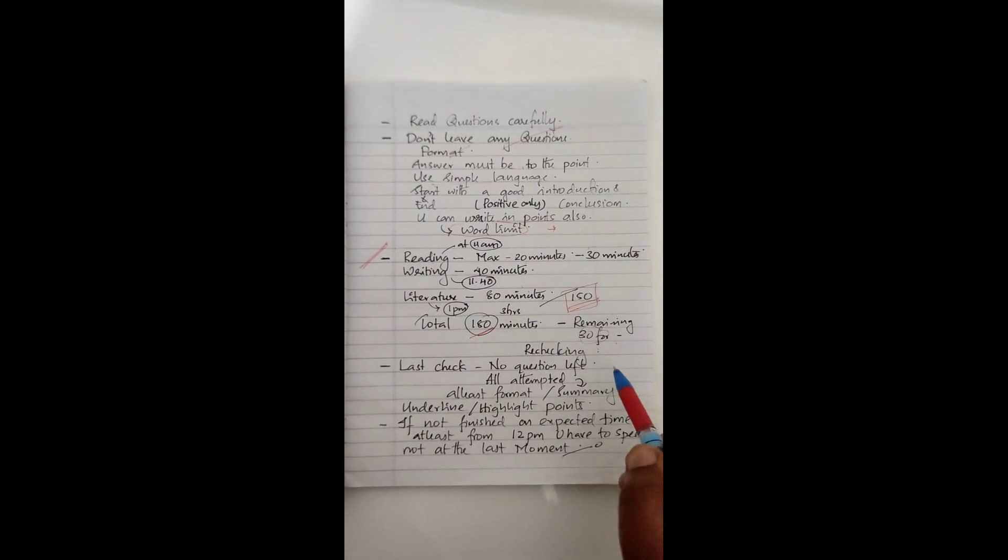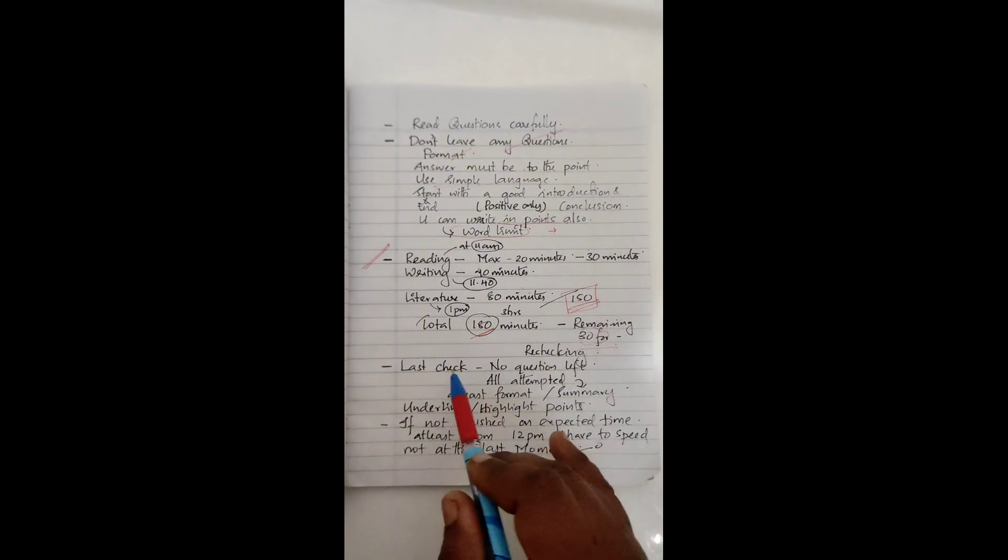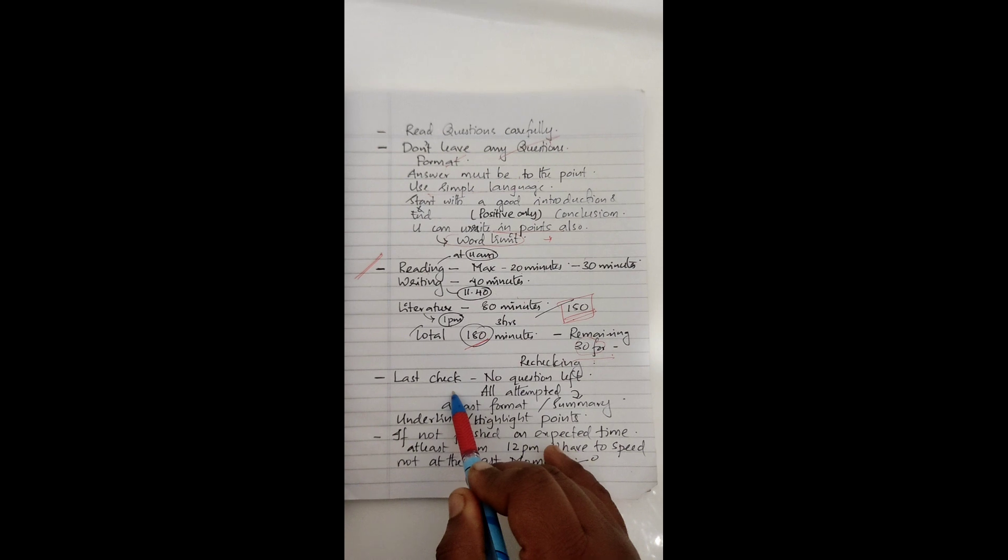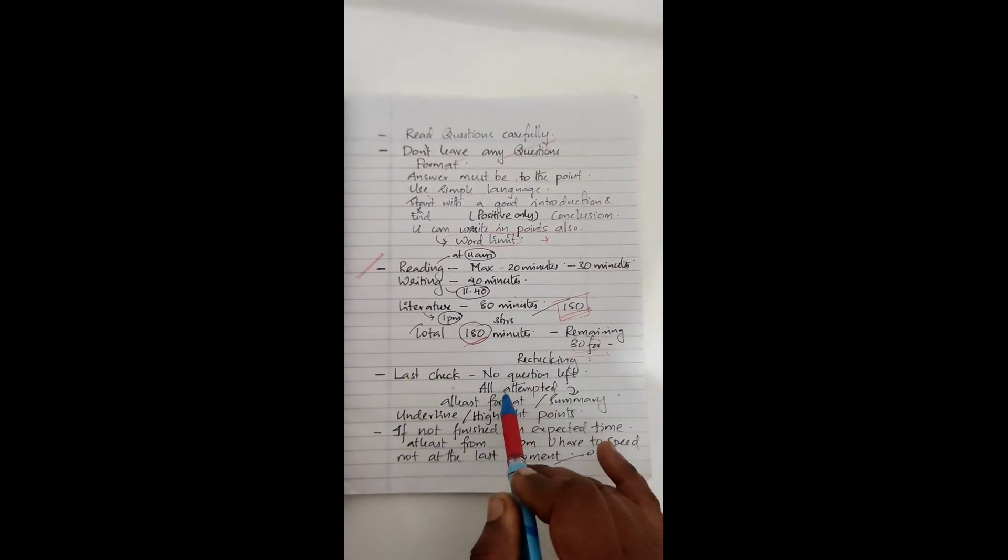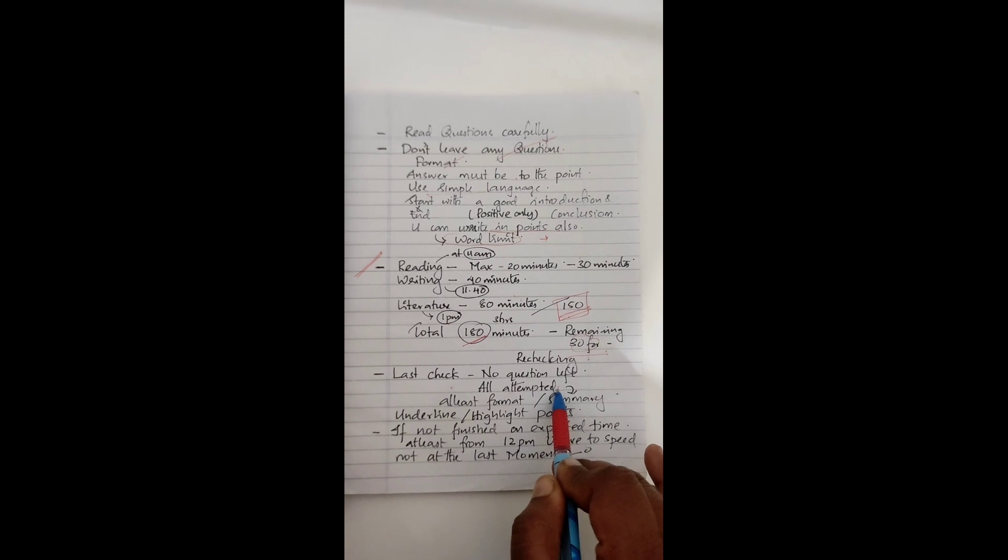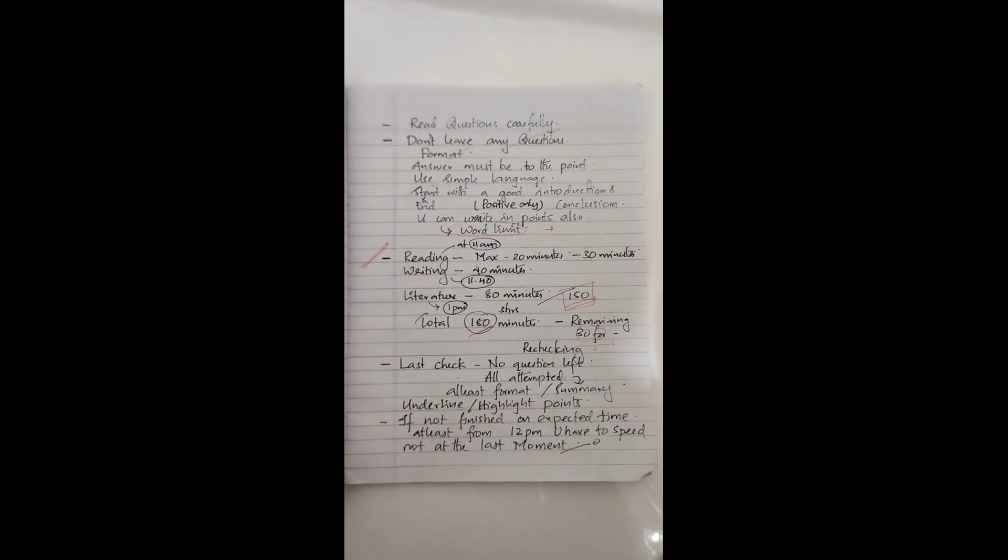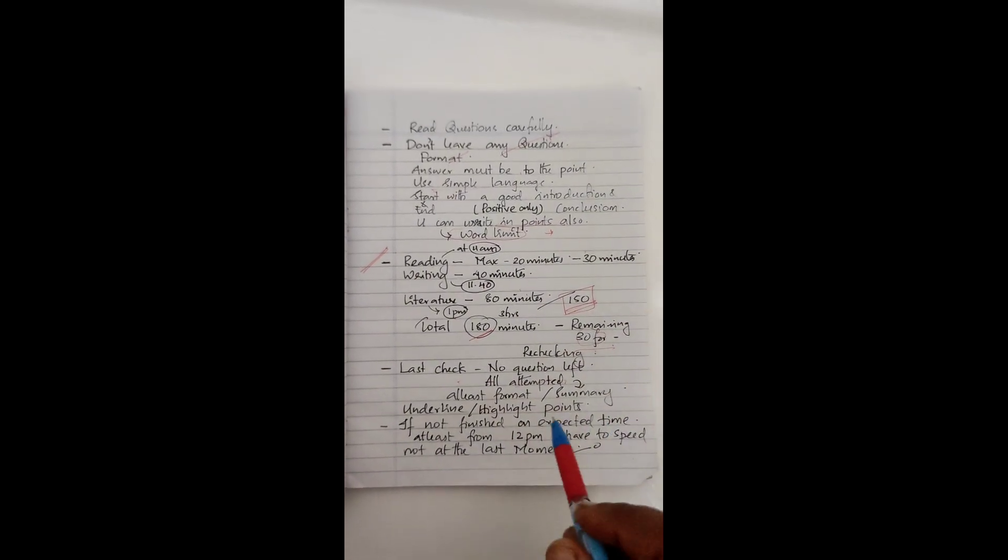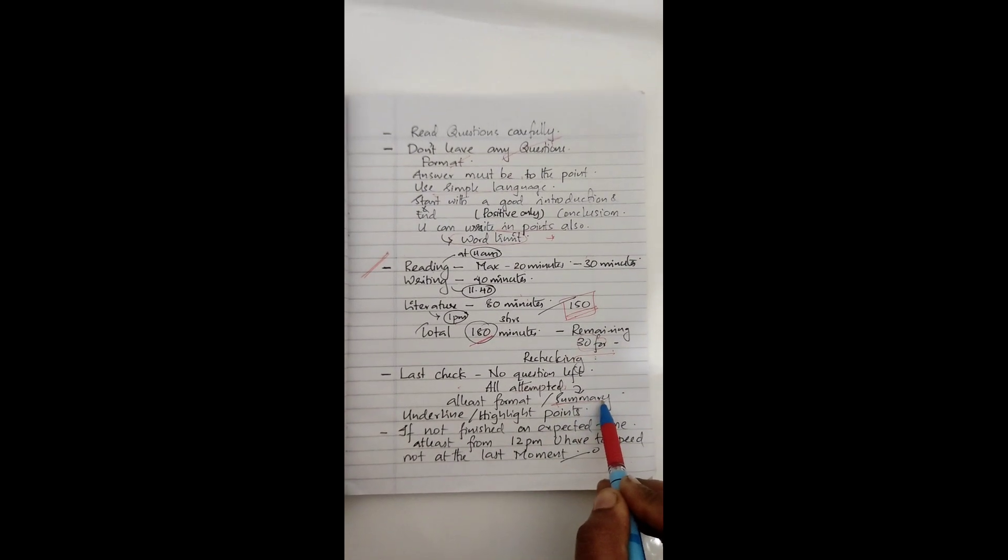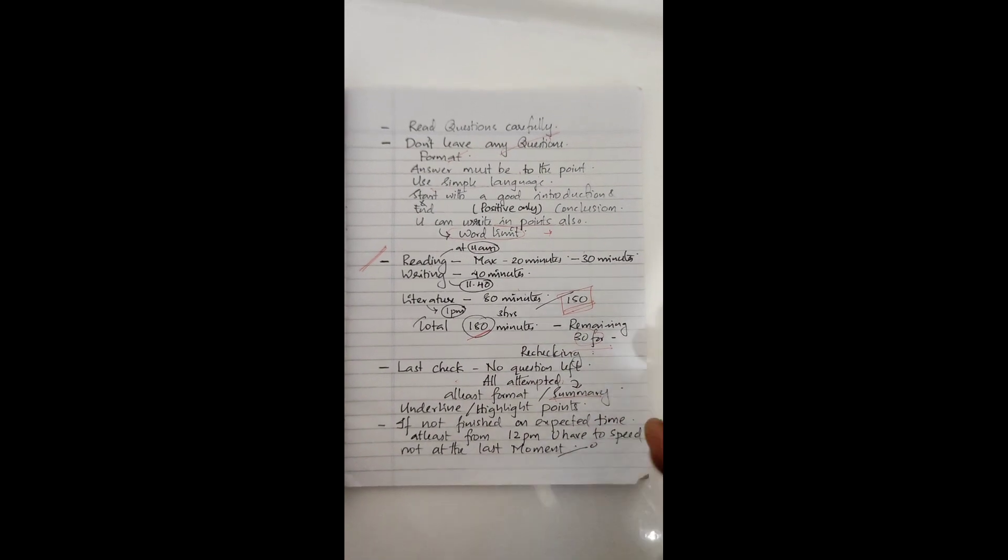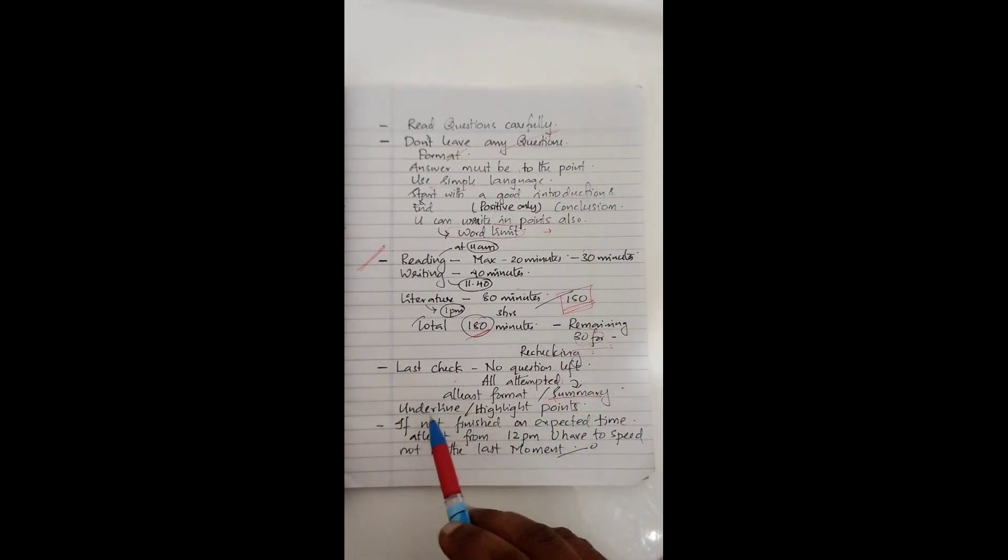So what you have to do in that 30 minutes - 30 minutes mein aapko last checking karna hai. Koi sabhi question choda nahi hai, rechecking karna hai. All questions are attempted, woh aapko make sure karna hai. At least format to likha rakho. Koi bhi question sa aapko bilkul bhi nahi mil rahi hai, jitna aapko pada hai woh sab kuch likh liya, phir bhi kuch na kuch questions ke idea nahi hai. Beta at least summary to likha rakho. Kuch na kuch aapko likhna padega, point points mein likhna padega. Underline or highlight the points, that's also very important.